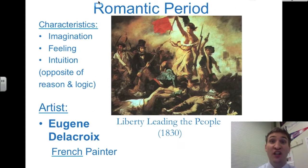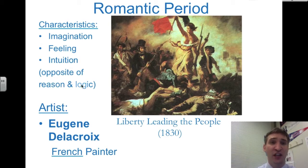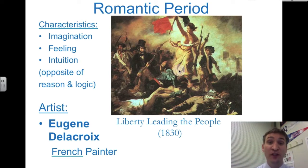The Romantic Period was another period of art during the age of reason — reason being applied to the natural world. Characteristics of the Romantic Period include imagination, feeling, and intuition, which is the opposite of using reason and logic. The Romantic Period took reason and exaggerated it. The artist that symbolizes the Romantic Period is French painter Eugène Delacroix. His most famous painting — out of over 9,000 paintings — is called Liberty Leading the People, completed in 1830, depicting a scene from France.